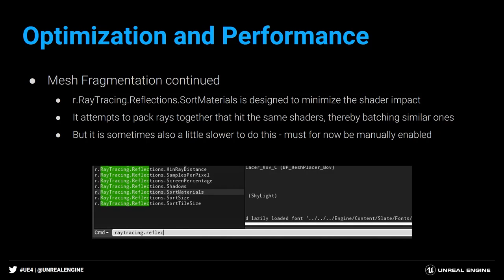In a well-optimized scene with limited materials, roughness and normal values have almost no impact on performance. But in a very fragmented scene, normal and roughness values of materials have a significant impact on performance.